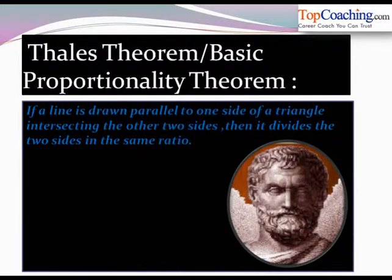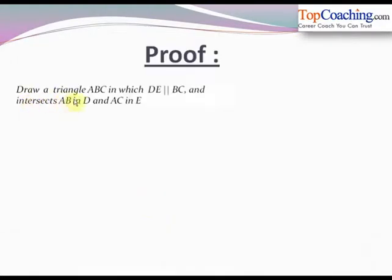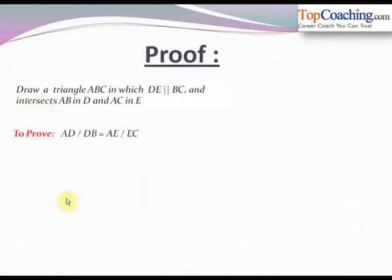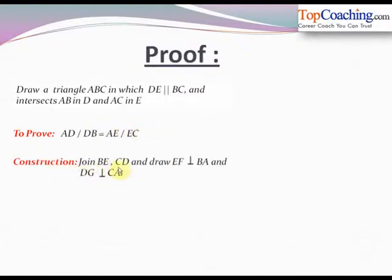The theorem says the parallel line divides the two other sides in the same ratio. For the proof, we draw triangle ABC in which DE is parallel to BC, and the line DE intersects AB at point D and AC at point E. We have to prove that AD/DB = AE/EC — that is, line DE divides sides AB and AC in the same ratio. For the construction, we join BE and CD, and draw EF perpendicular to BA and DG perpendicular to CA.